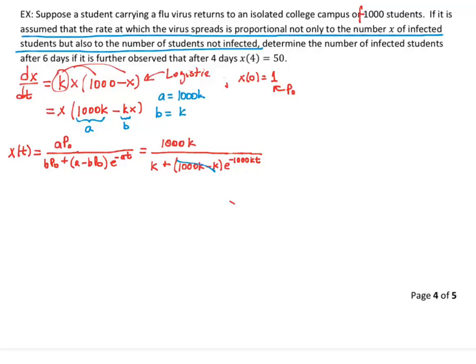So this is 999 k, and then notice that I've got a k here, here, and here that I can cancel all the way out. So I end up with the following model, not knowing what k is, I still have 1,000 divided by 1 plus 999 e to the negative 1,000 kt. So k is still an unknown parameter, so how do we find k?